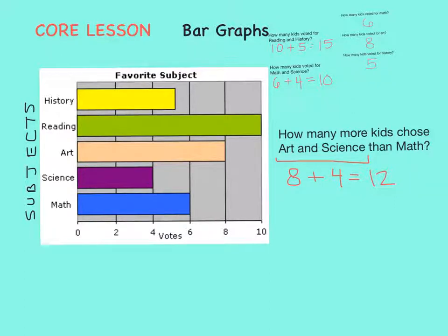The key words here are how many more. That tells us we want to find the difference between art and science and math, so we'll need to subtract. Math had six votes, so twelve minus six equals six.